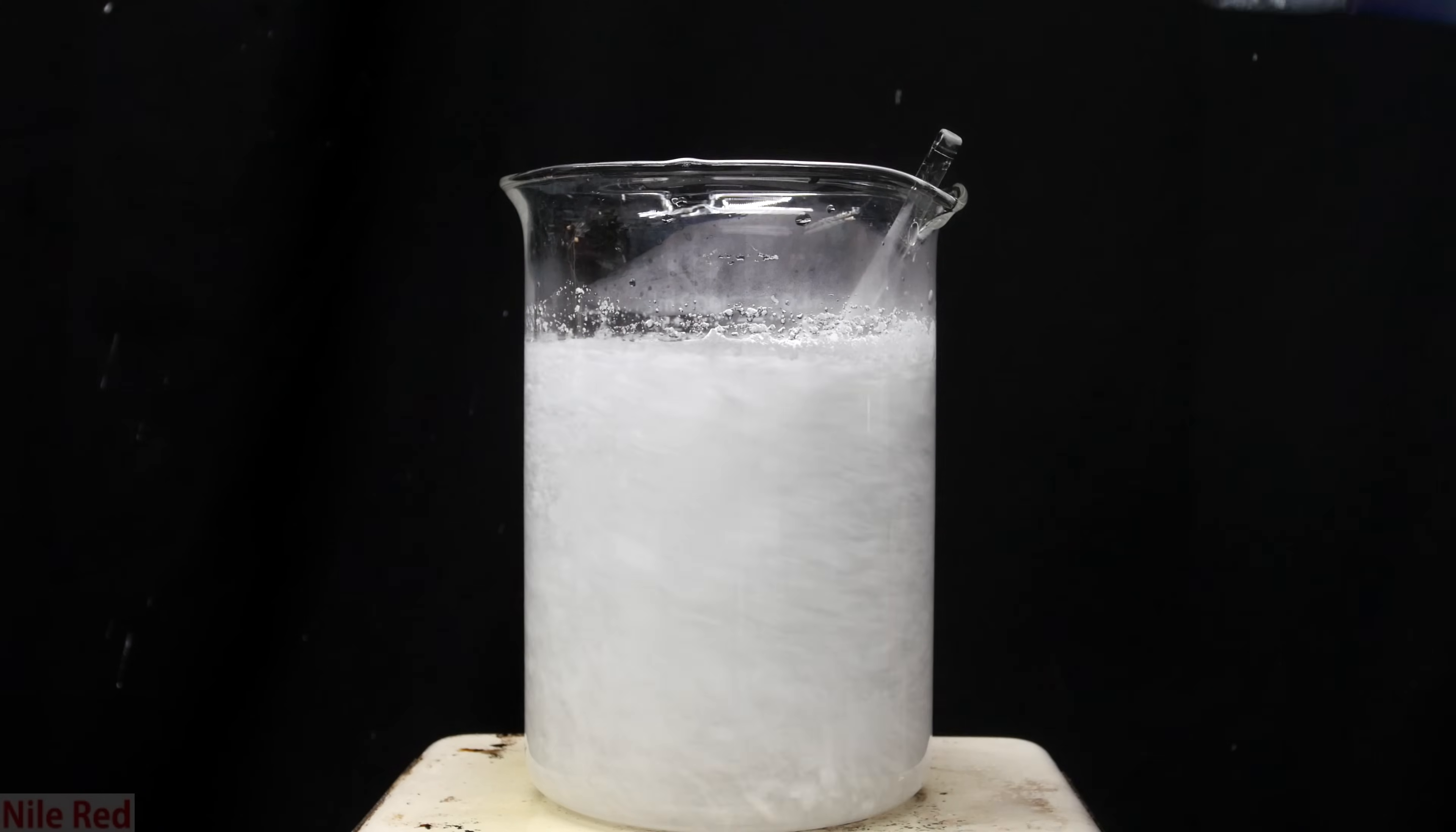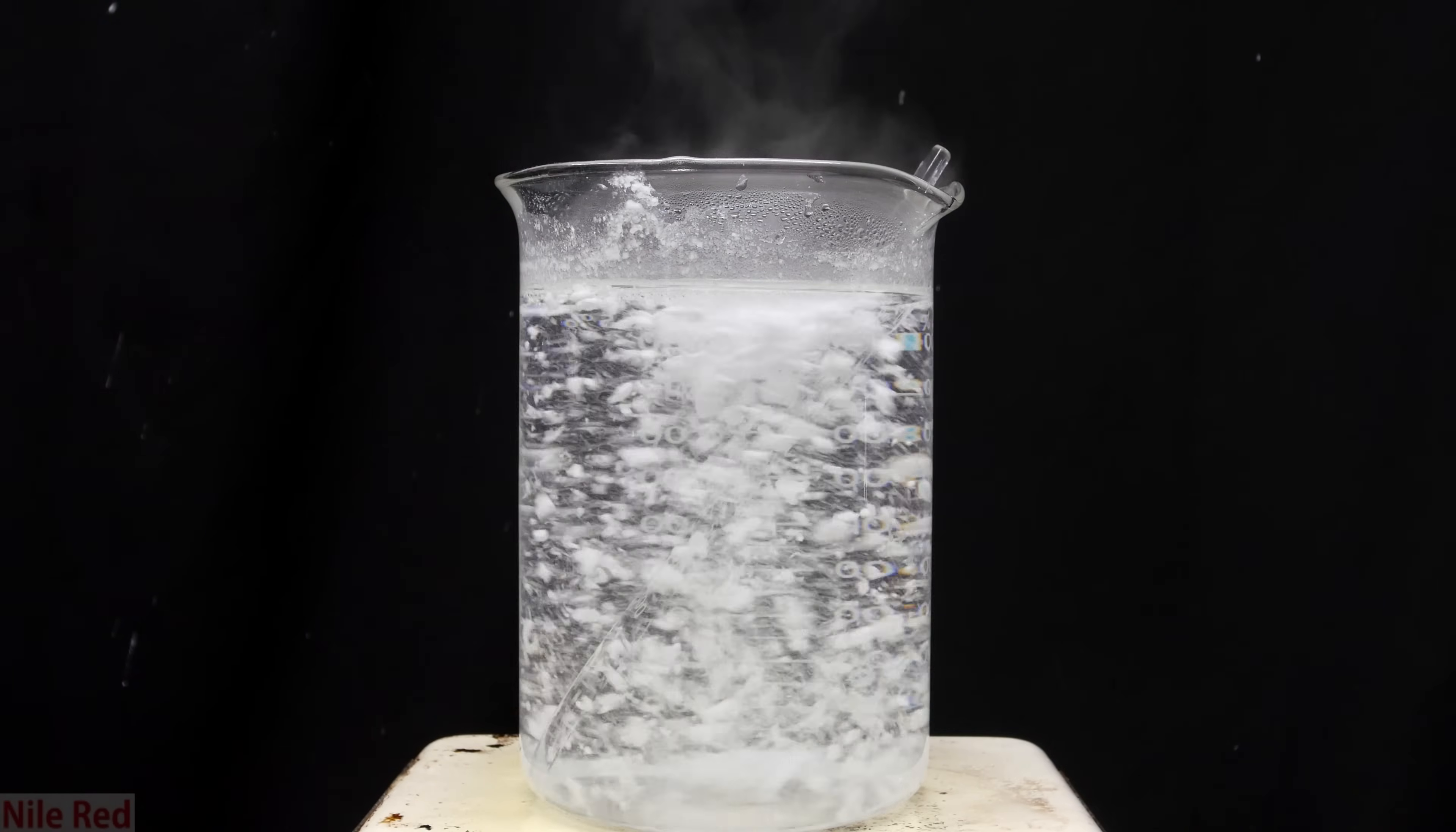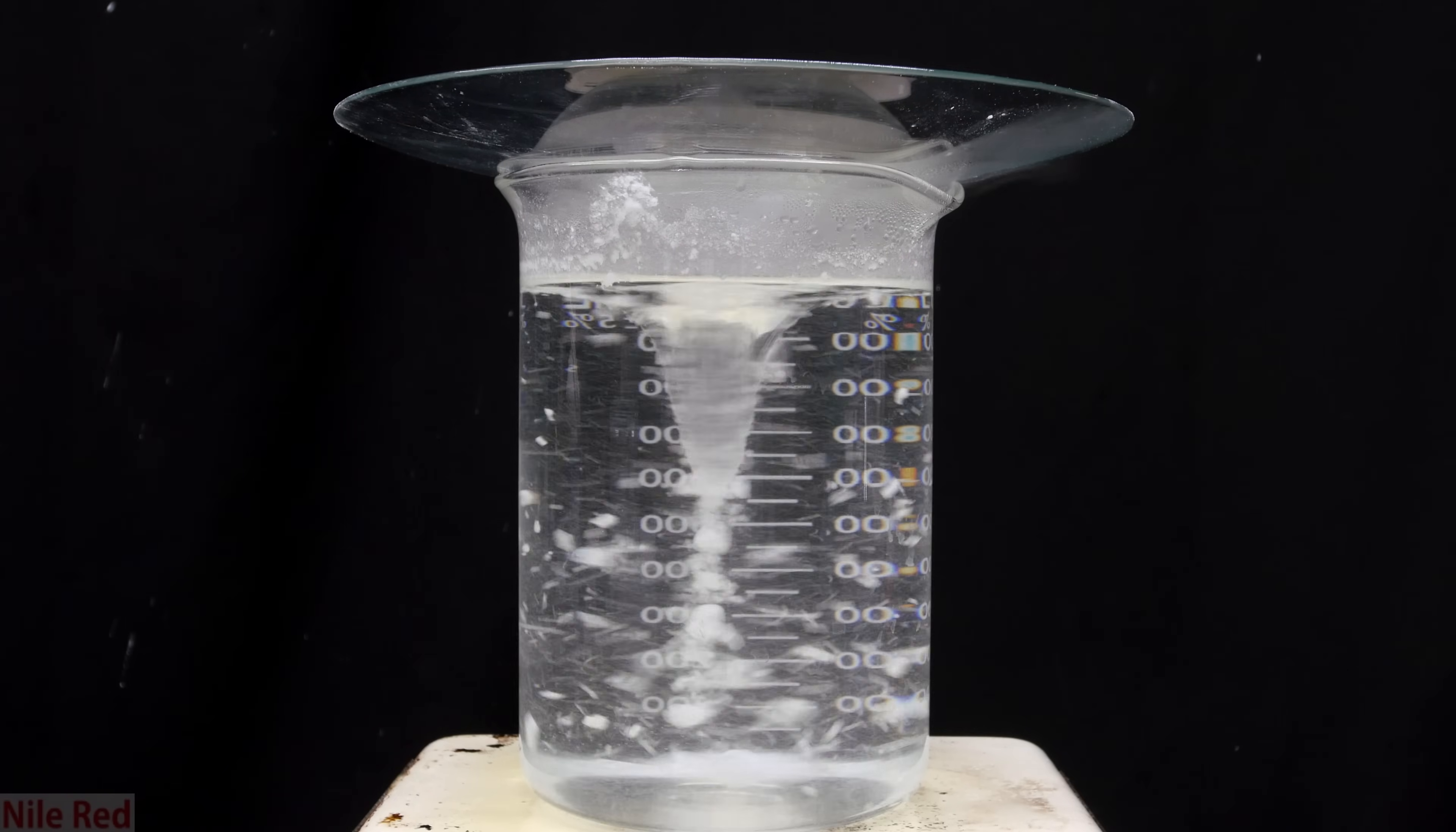So basically, anytime the water reaches its boiling point, but there's still undissolved benzoic acid, we need to add more water. As we do this, the amount of solid benzoic acid that's floating around slowly decreases. I place the watch glass on top just to limit how much water is lost as it boils.